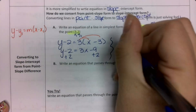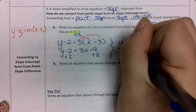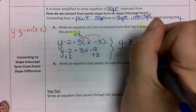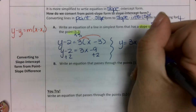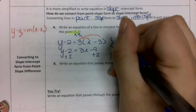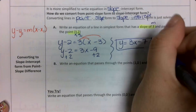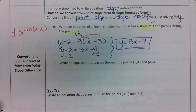So I get y equals 3x, and then negative 9 plus 2 is negative 7. So my answer for part a is y equals 3x minus 7.